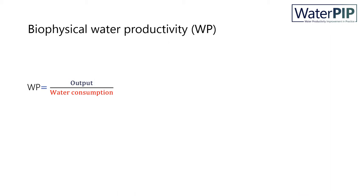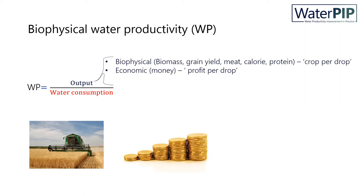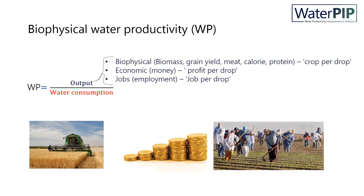Water Productivity can be defined as the output generated in the form of biophysical, money or jobs per unit of water consumption. The biophysical output can be expressed in the form of biomass, crop yield or their derivatives such as meat, calories or protein. The focus of this presentation is on the improvement of biophysical water productivity expressed in the form of crop yield per unit of water consumption — that is crop per drop.